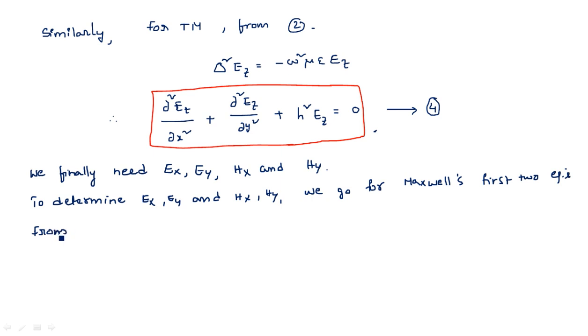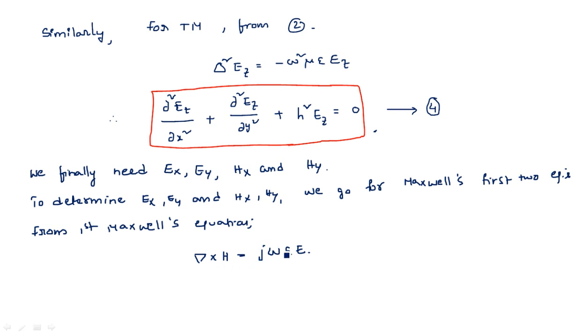Taking the first Maxwell's equation: Del × H = jωεE. We write Del × H as a determinant with i-cap, j-cap, k-cap in the first row; ∂/∂x, ∂/∂y, ∂/∂z in the second row; and Hx, Hy, Hz in the third row. This equals jωε times E.